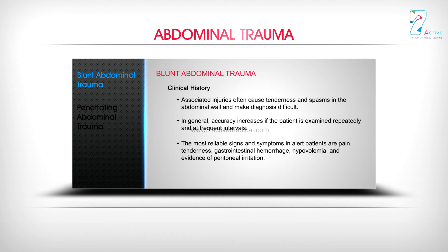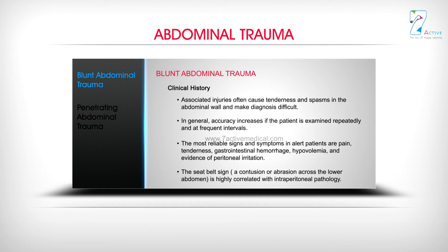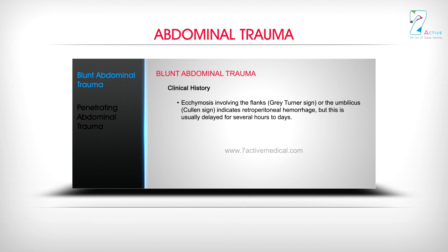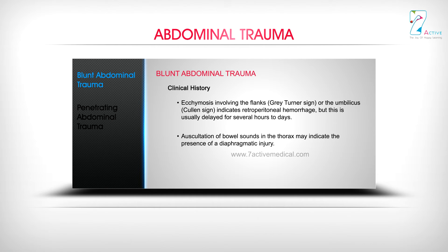The most reliable signs and symptoms in alert patients are pain, tenderness, gastrointestinal hemorrhage, hypovolemia, and evidence of peritoneal irritation. The seat belt sign — a contusion or abrasion across the lower abdomen — is highly correlated with intraperitoneal pathology. Ecchymosis involving the flanks (Gray-Turner sign) or the umbilicus (Cullen sign) indicates retroperitoneal hemorrhage, but this is usually delayed for several hours to days. Auscultation of bowel sounds in the thorax may indicate the presence of a diaphragmatic injury.